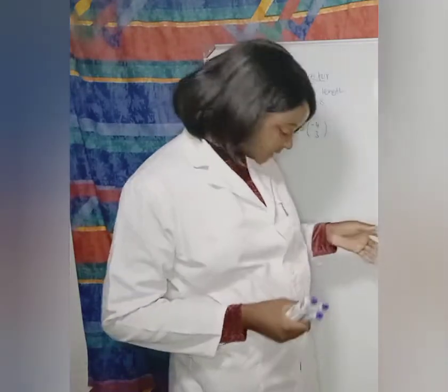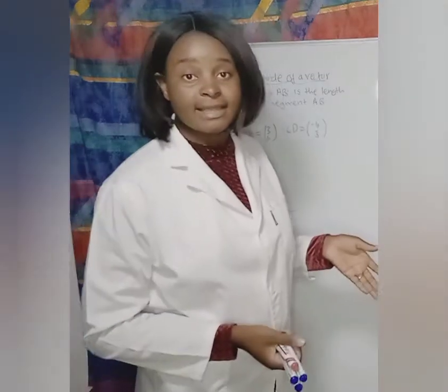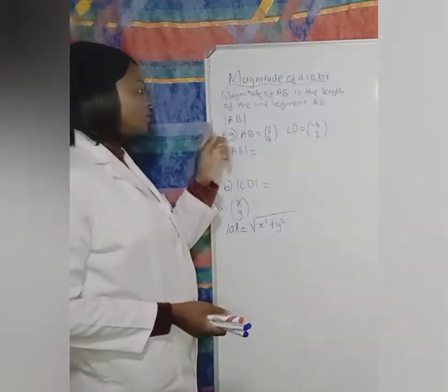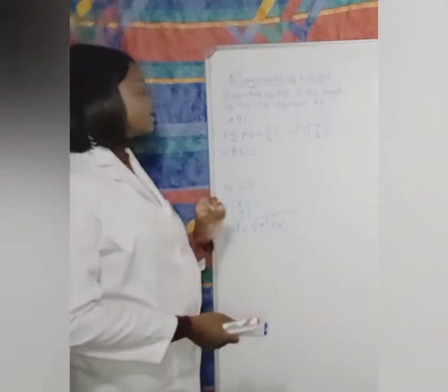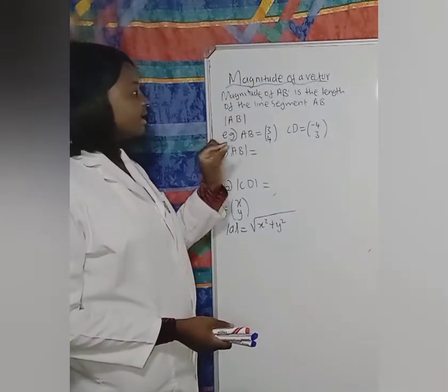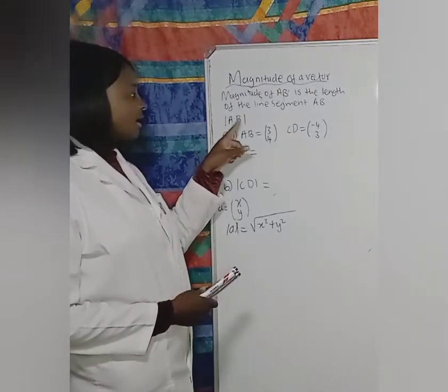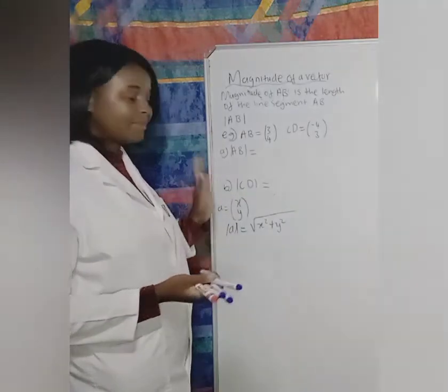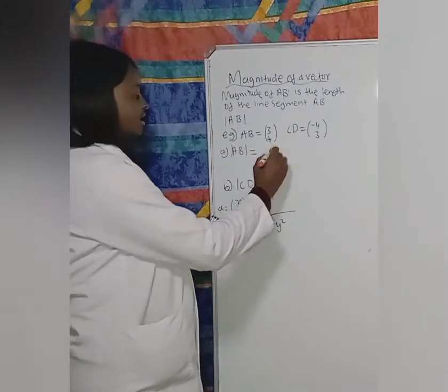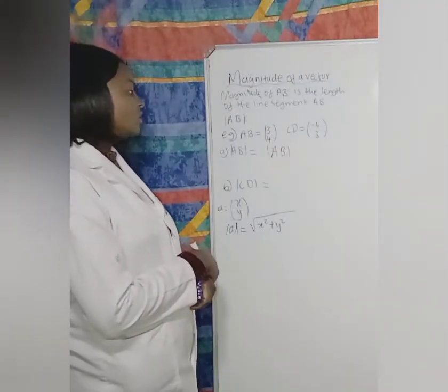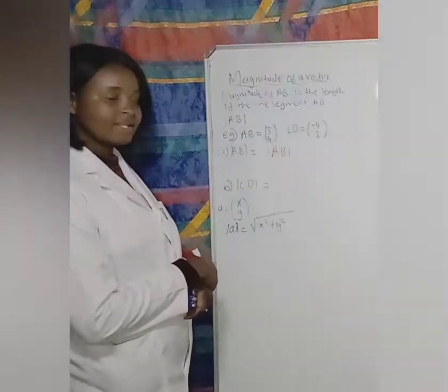Hi guys, welcome to my tutorials. We are continuing with vectors today — we are looking at the magnitude of vectors. Magnitude simply means you are calculating the length. For example, if they ask you the magnitude of AB, they are simply asking for the length of AB. When asking for magnitude, they have a special way of writing it — they put two lines like brackets around the vector.